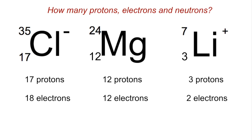And then finally for neutrons, we subtract the small number from the big, so it's 18 for the Cl- ion.